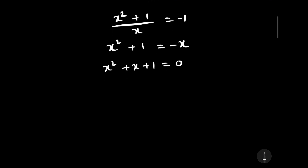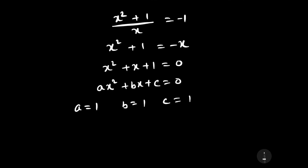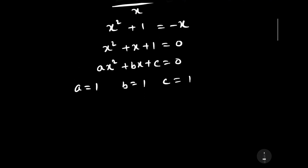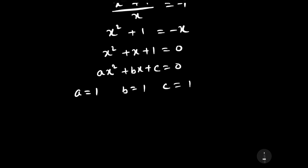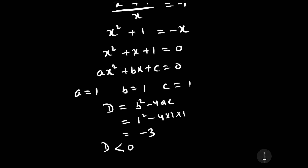If we compare it with the standard quadratic equation x squared plus bx plus c equals 0, then the value of a is 1, b is 1, and c is also 1. Since we are interested in calculating its roots, we need to know the value of the discriminant, which tells whether the roots are real or not. The discriminant D equals b squared minus 4ac equals 1 minus 4 equals minus 3. Since D is less than 0, the equation has no real roots — it has complex roots.